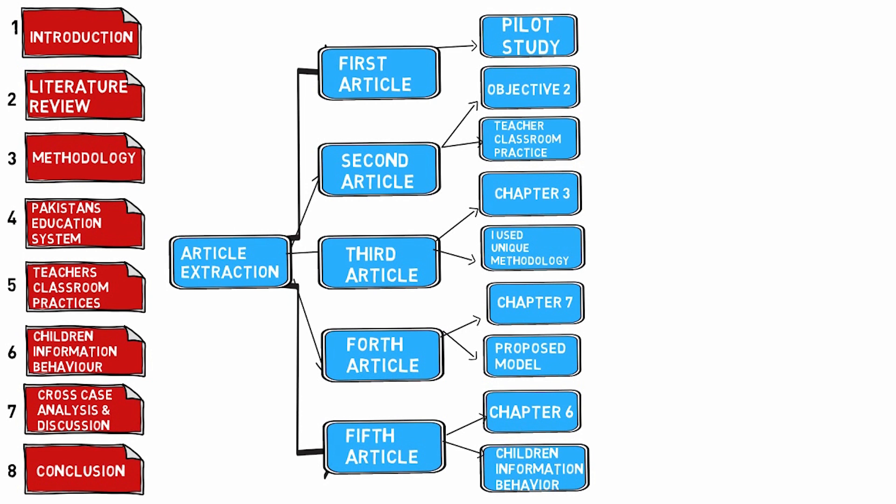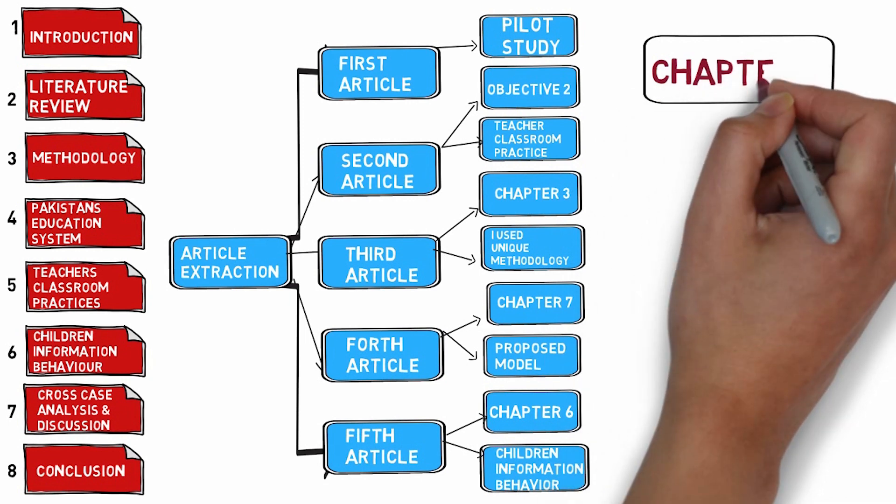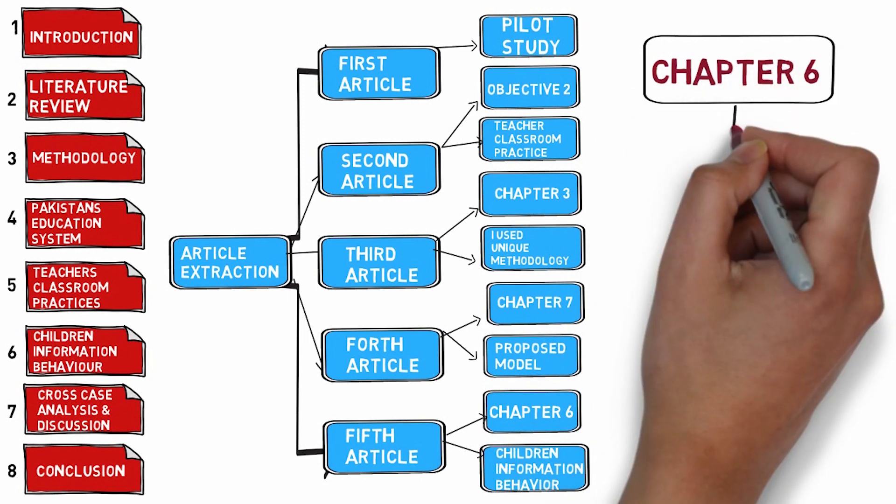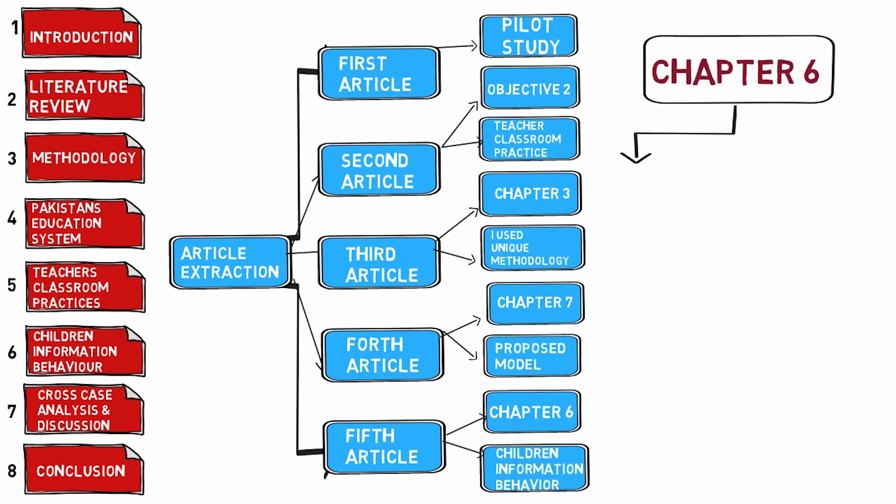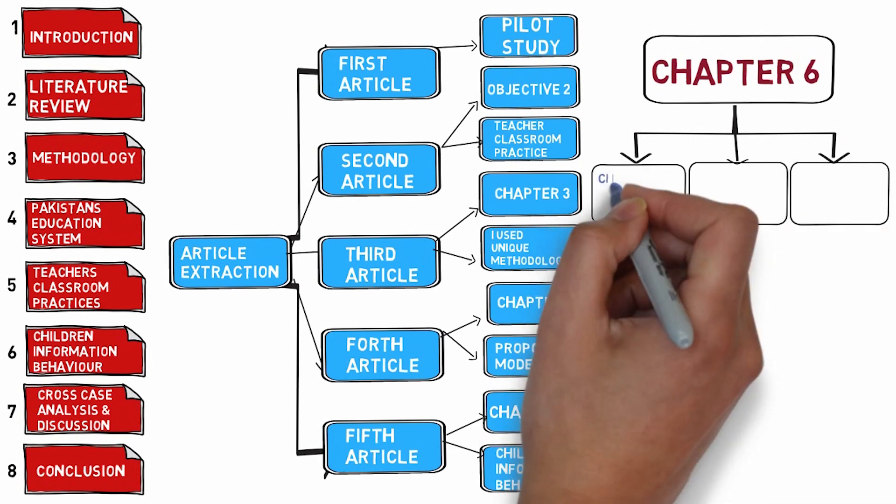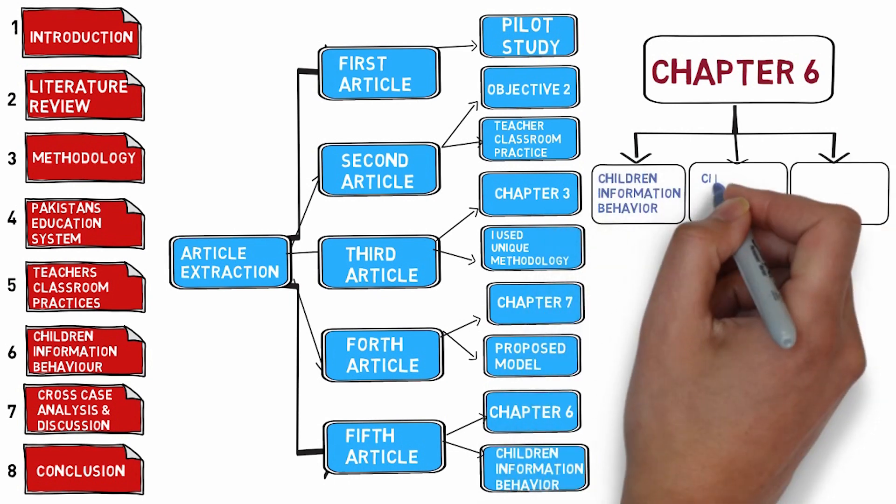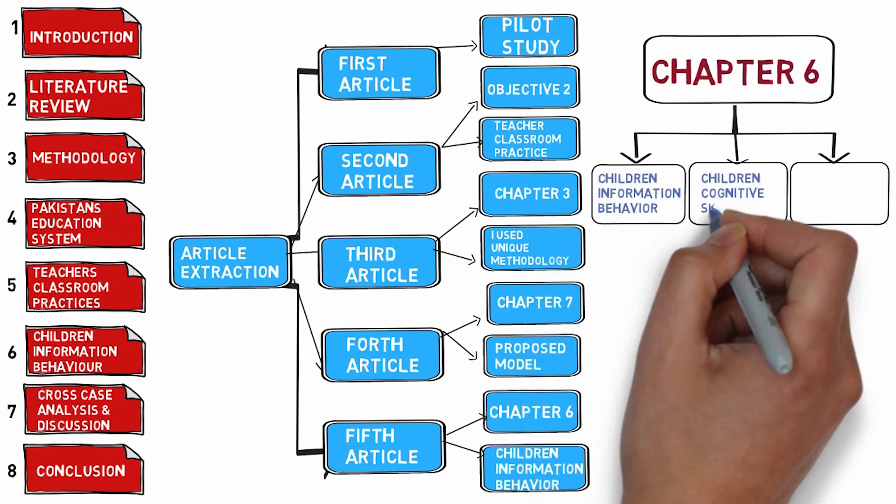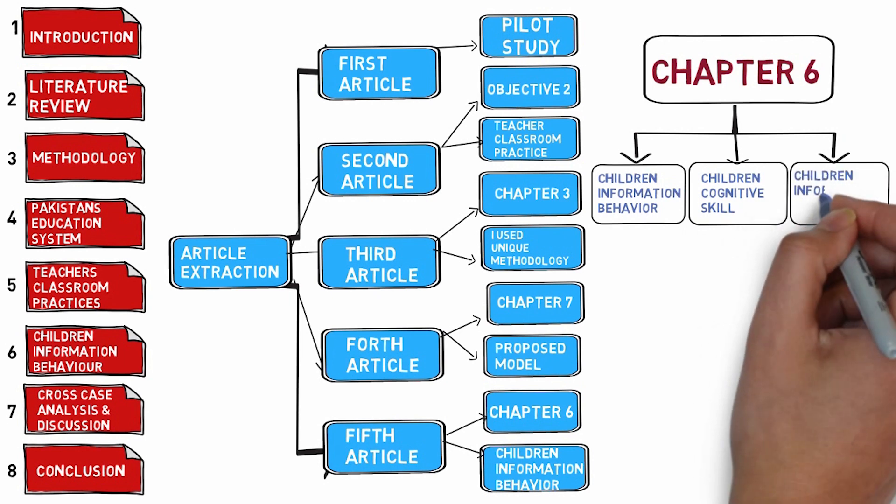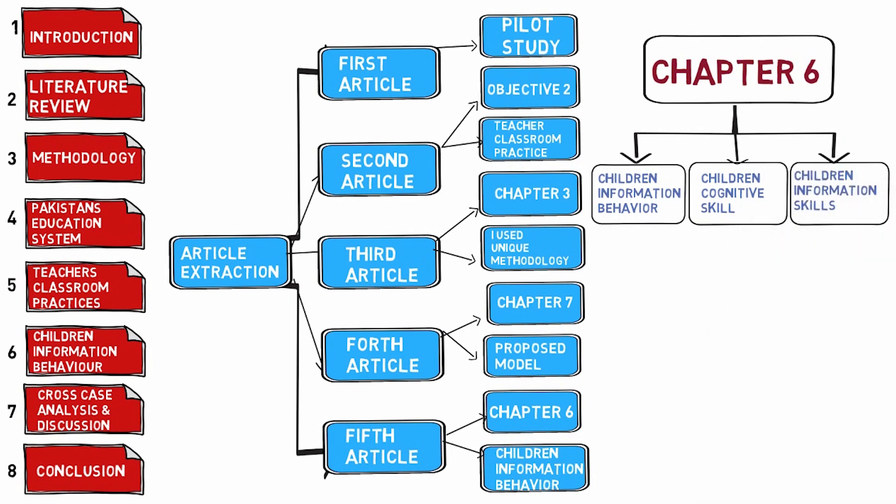Another approach is dissecting each chapter to see the potential of extracting sub-topics or articles from even one chapter. See the example of my chapter six, which was about children's information behavior. I can divide this chapter into further three sub-topics: that is, children's information behavior, children's cognitive skills, and children's information skills. So viewers, on each sub-topic I can have three more articles.